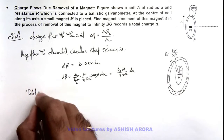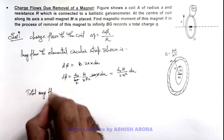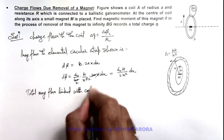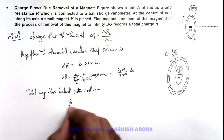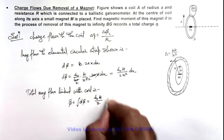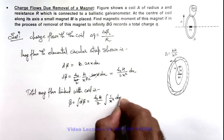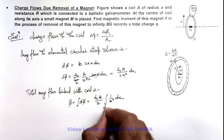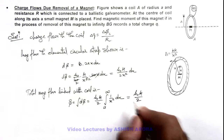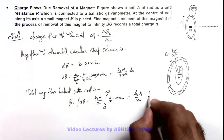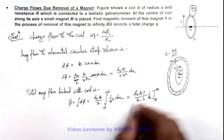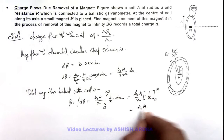So we can calculate the total magnetic flux linked with the coil. This total linked flux is the integration of dφ, that is (μ₀m/2) times the integral of 1/x² dx, integrated from a to infinity. The integral of 1/x² gives −1/x, and putting the limits from a to infinity gives the result μ₀m / (2a).